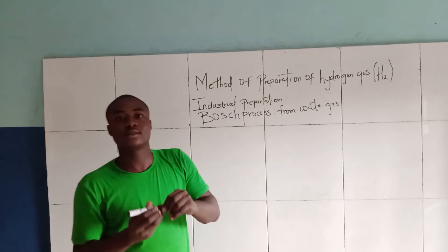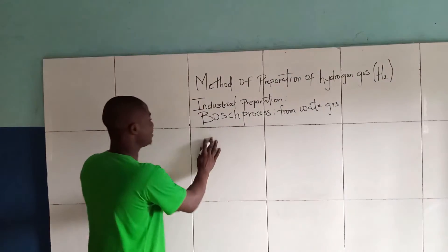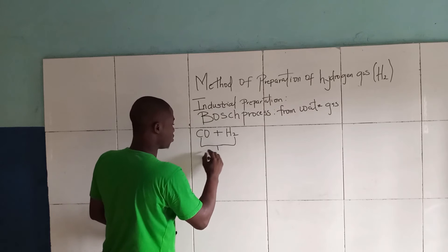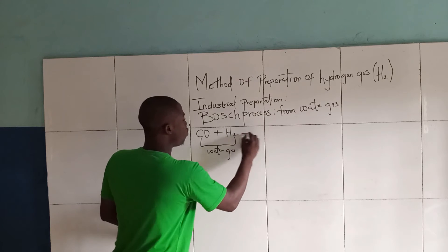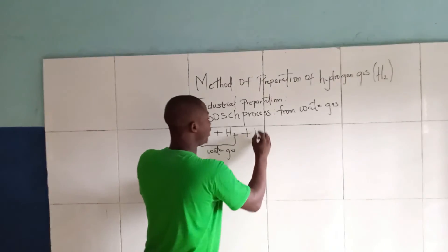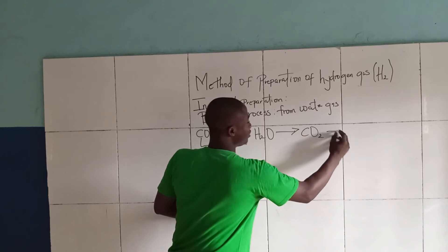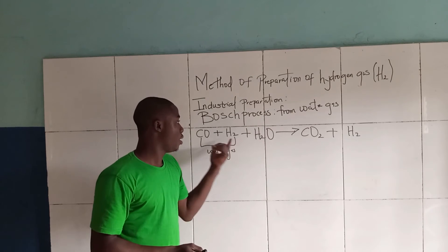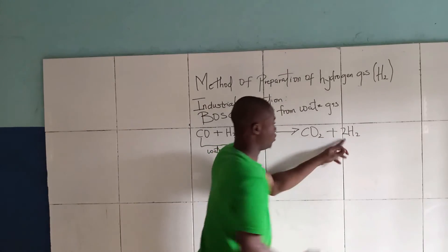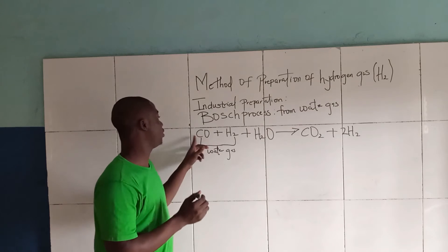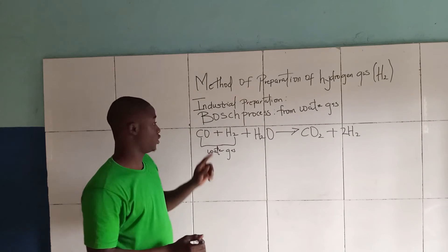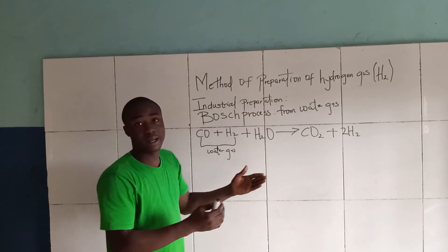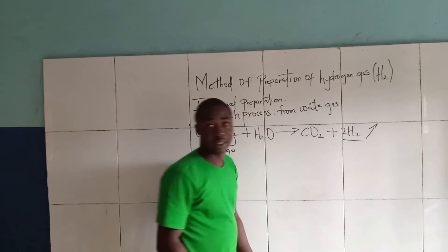The question we ask ourselves is: what is water gas? Water gas is simply carbon monoxide reacting with hydrogen gas — this is water gas. Water gas reacting with water (H₂O), we are going to get carbon dioxide and hydrogen gas. Let's balance the reaction: we have 4 atoms of hydrogen, so it becomes 2 here — 2 times 2 is 4. Carbon is 1 on each side, and oxygen is 2 on each side. The reaction is balanced, and the gas being liberated is hydrogen gas.